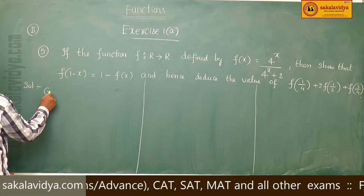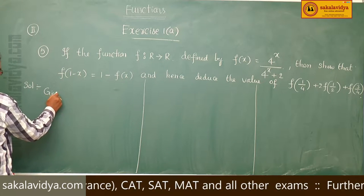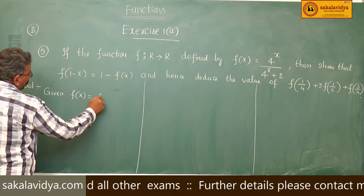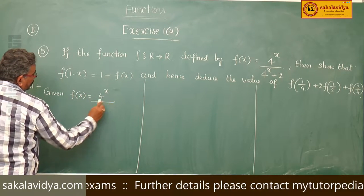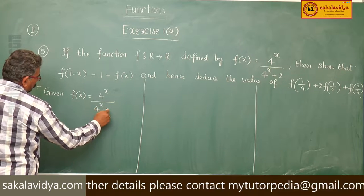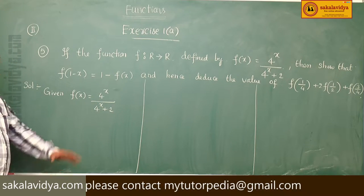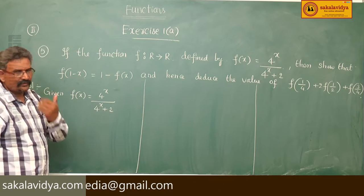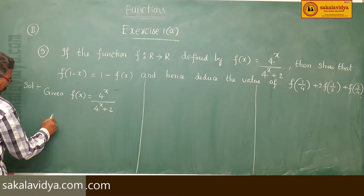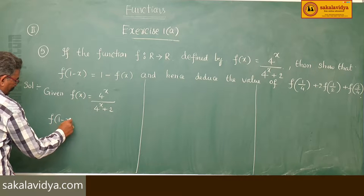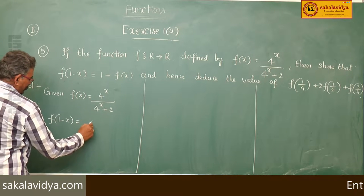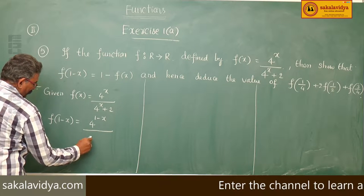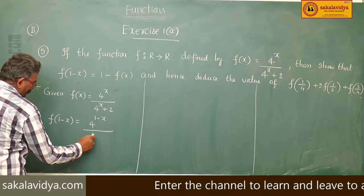Given f of x is equal to 4 power x by 4 power x plus 2. It is better to find out first the f of 1 minus x value. So, f of 1 minus x is 4 to the power of 1 minus x divided by 4 to the power of 1 minus x plus 2.